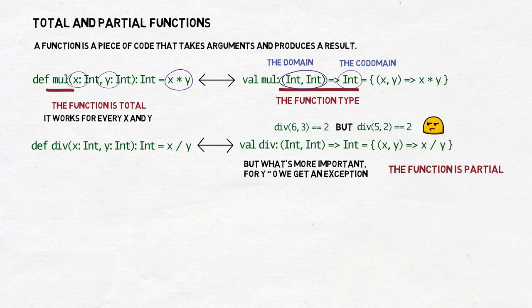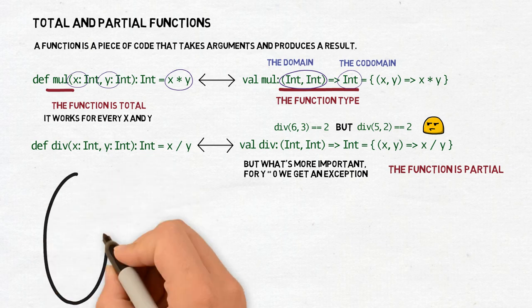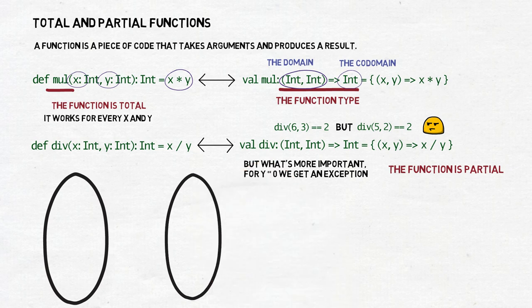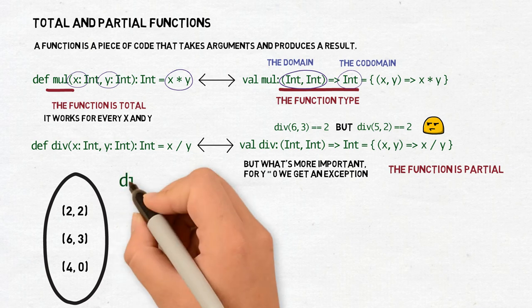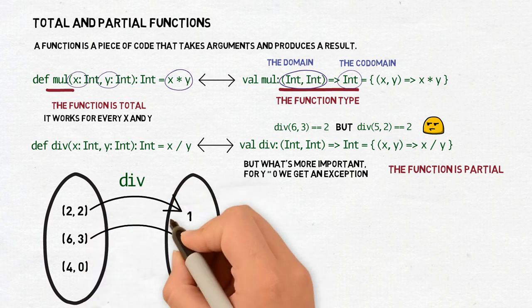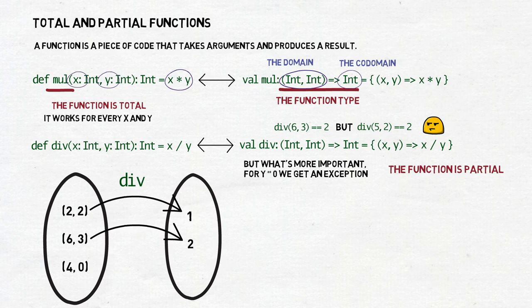Again, from a more mathematical point of view, we can say that such a function is a mapping from one set of elements to another. The set of arguments in our case are all tuples or pairs of integers. The set of results are all integers, not pairs, just integers. The function tries to map each tuple from the set of arguments to one of integers in the set of results. The multiplication function is able to do it, but the division function fails for some tuples. The division function is partial.